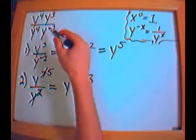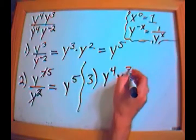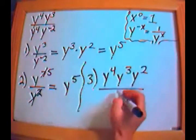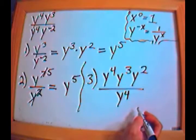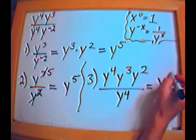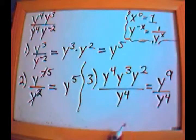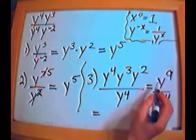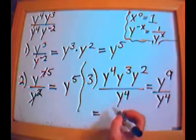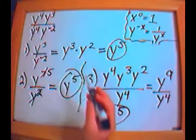Method number three: move the negative exponent upstairs first. That gives y to the fourth times y to the third times y squared, all over y to the fourth. On top: 4 plus 3 plus 2 is 9, giving y to the ninth over y to the fourth. Subtracting: 9 minus 4 is 5, so again y to the fifth. All three methods give the same answer.